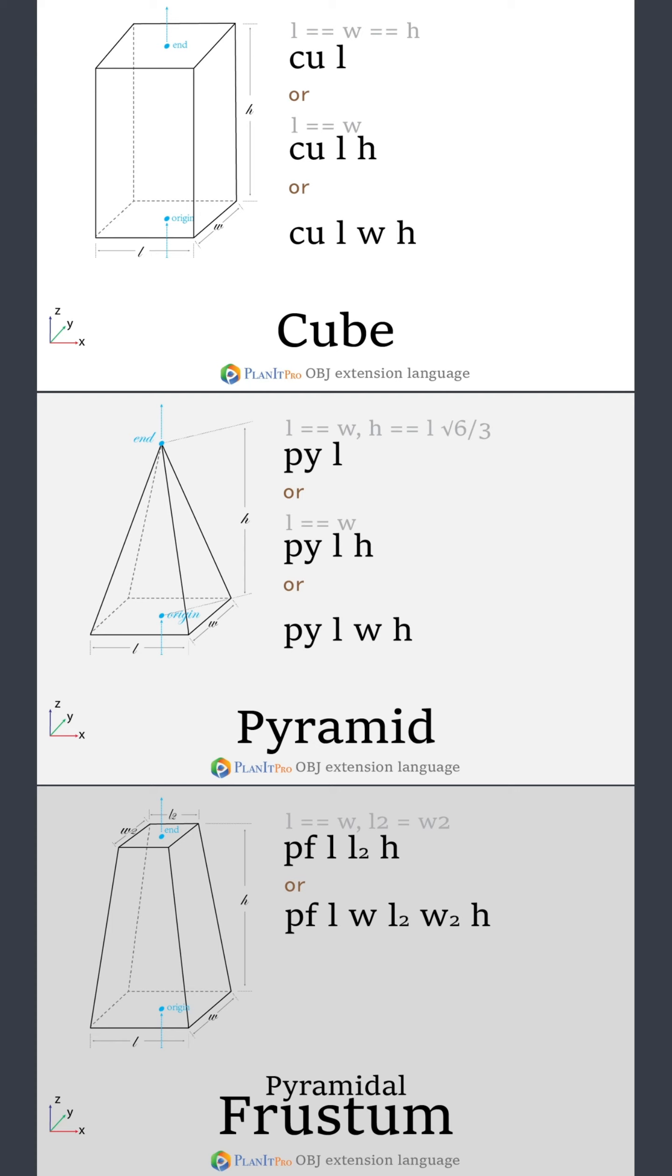For example you can specify a cube's length, width, and height. If all three are the same you can use the first format which simply defines the length. If the base is a square, which means the length is the same as the width, then you can use the second format. Finally, if all three values are different, use the last format.